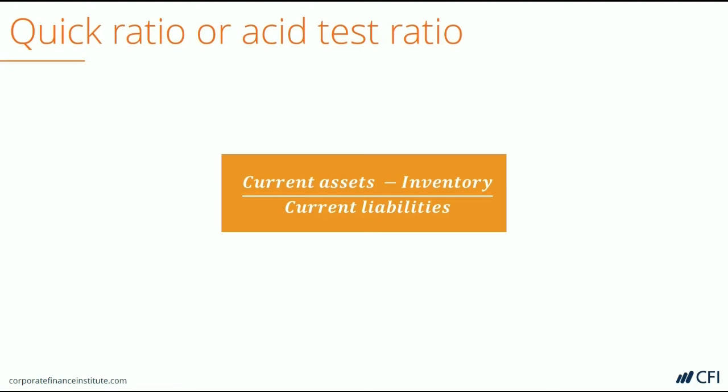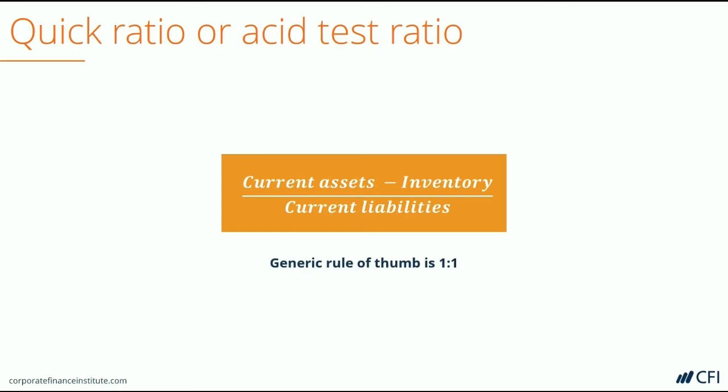Because this metric is more conservative, it's okay to have a lower ratio. A generic rule of thumb would be 1 to 1.